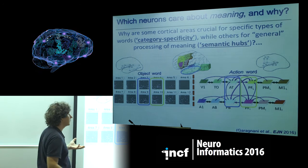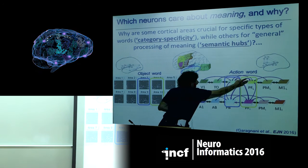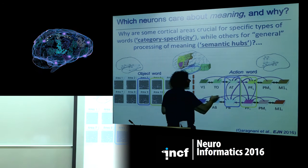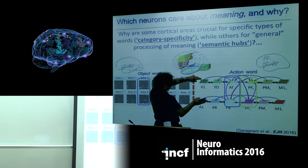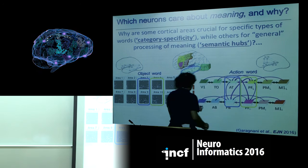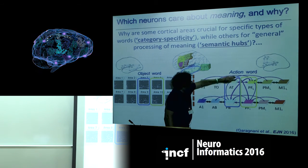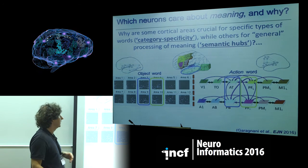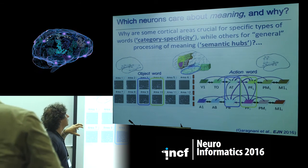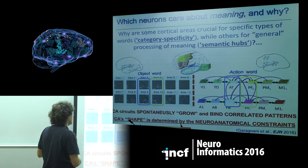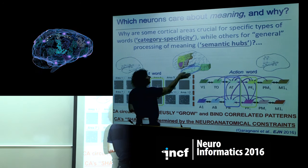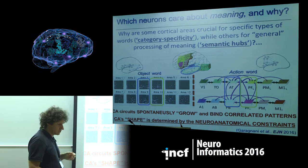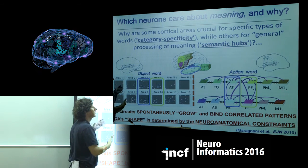Why do both circuit types coexist in semantic hubs? Because of connectivity: the cell assemblies are allowed by the hub connections to extend freely to areas not strictly needed for connecting the patterns. For an action word, the assembly doesn't need to pass through the hub, but because of connectivity and the properties of spontaneous Hebbian-driven cell assembly growth, it grows there anyway. The co-presence of equally strong circuits for both categories in semantic hubs creates the impression that these hubs are general, but what we see is the co-presence of different circuits in the same cortical areas.